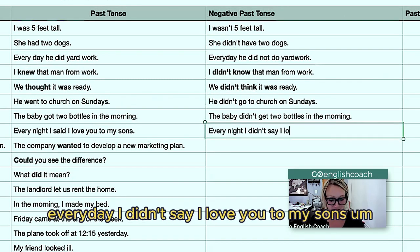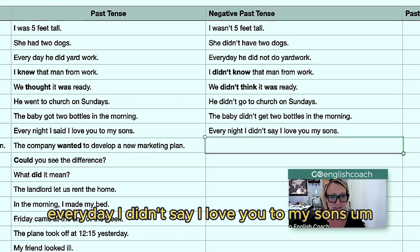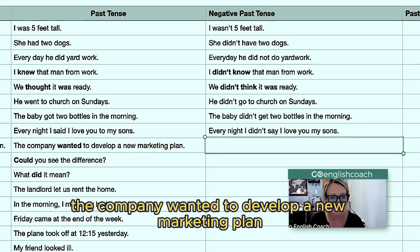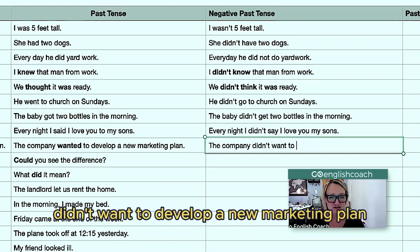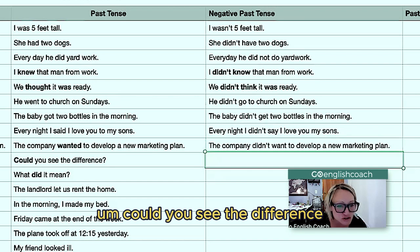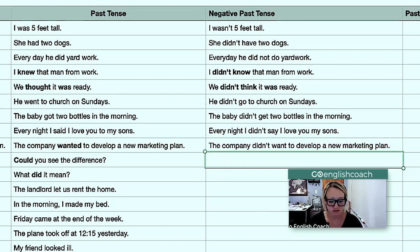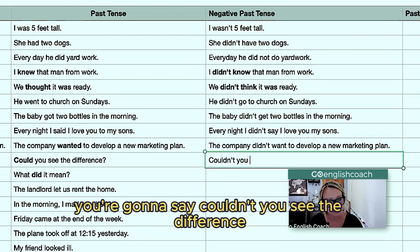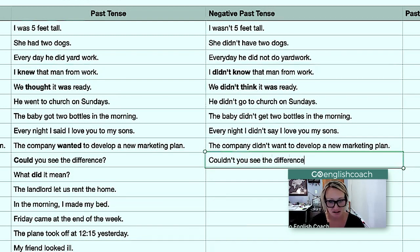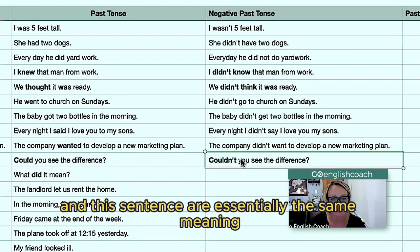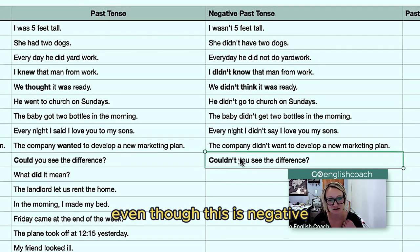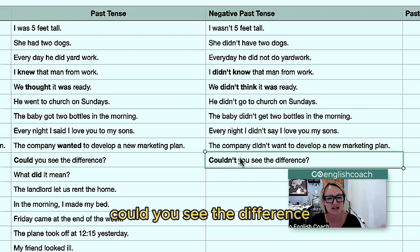The company wanted to develop a new marketing plan — the company didn't want to develop a new marketing plan. Could you see the difference? You're going to say, couldn't you see the difference? What we've discussed before is that these two sentences are essentially the same meaning — you're asking basically the same question, even though one is negative.